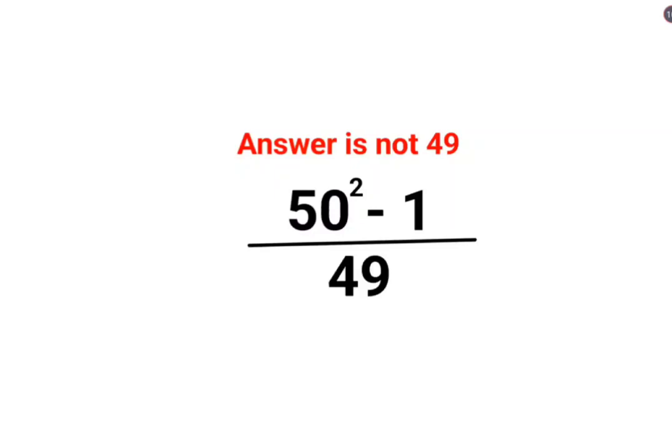Welcome everyone. So yes, a lot of people thought that the answer for this one was supposed to be 49. Because 50 square minus 1, unfortunately people thought this is nothing but 49 square upon 49. So when that gets reduced, the answer is 49.